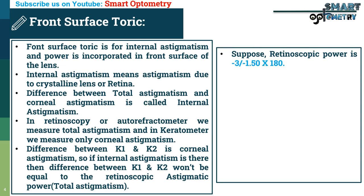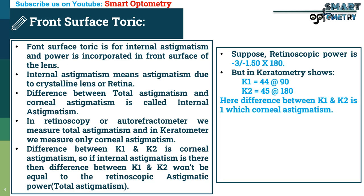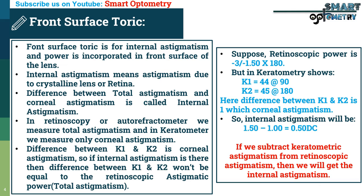For example: suppose retinoscopic power is -3.00 / -1.50 × 180°. But keratometry shows K1 = 44D at 90° and K2 = 45D at 180°. The difference between K1 and K2 is 1D, which is the corneal astigmatism. So internal astigmatism equals total astigmatism (1.50D) minus corneal astigmatism (1.00D) = 0.50 diopter cylinder of internal astigmatism.